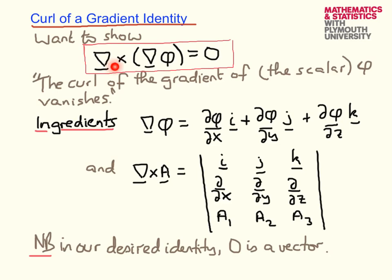Note, by the way, that when I say it vanishes, this is a vector, so this is a zero vector. It's a three-dimensional vector with each component vanishing.